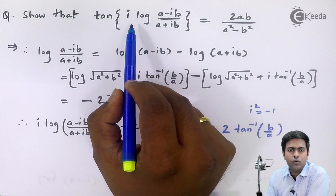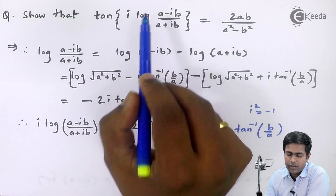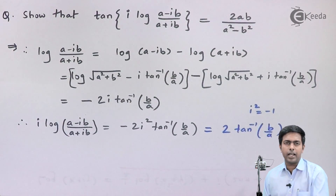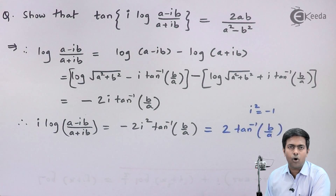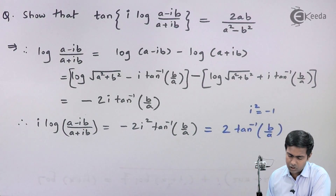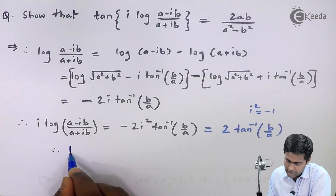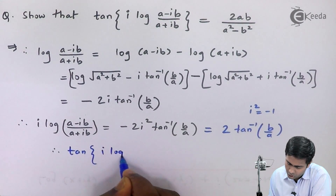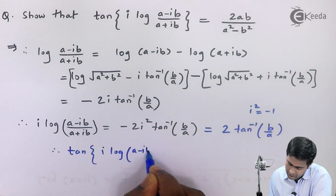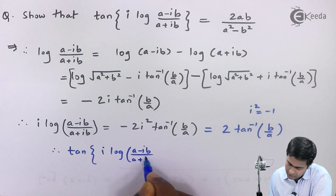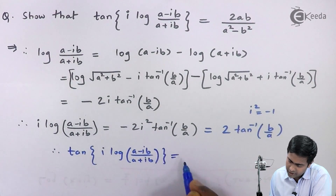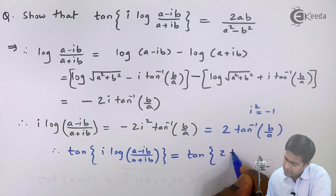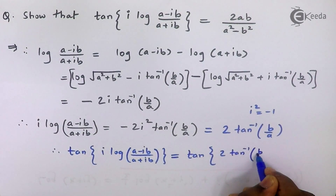Now we take tan of both sides. Therefore, tan of i·log((a − ib)/(a + ib)) is equal to tan(2·tan⁻¹(b/a)).